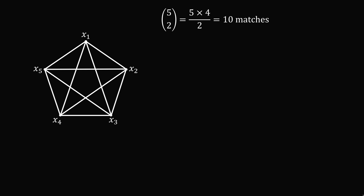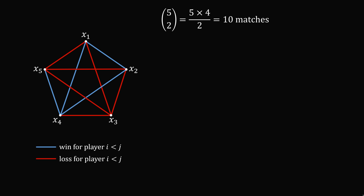Now let's color these edges. We can color an edge blue if it's a win for player i less than j, and we'll color it red for a loss. So each of the different edges has two different colorings. The total number of possibilities is equivalent to the total number of colorings. We have 10 edges with two different possibilities for each one, so that will be 2 to the 10 different possibilities for the outcomes of these matches.